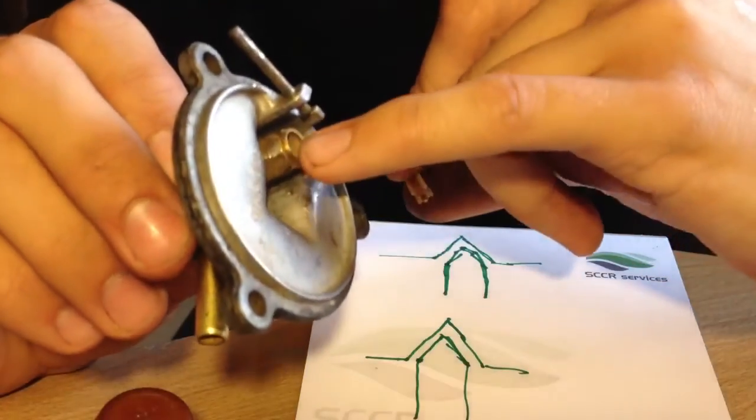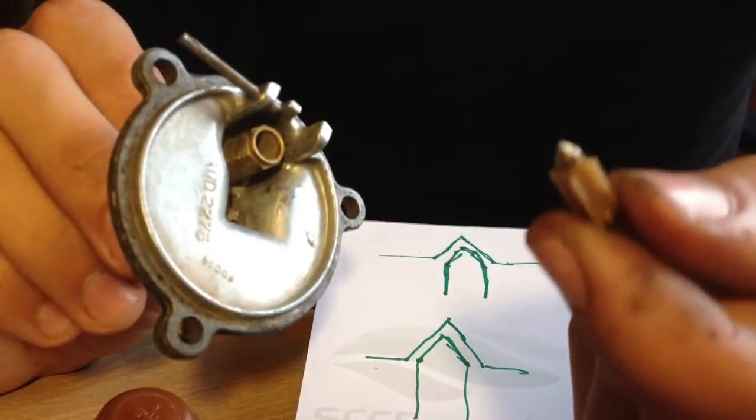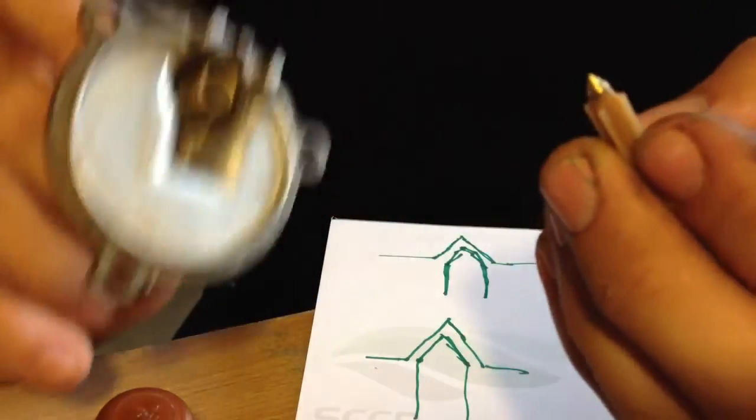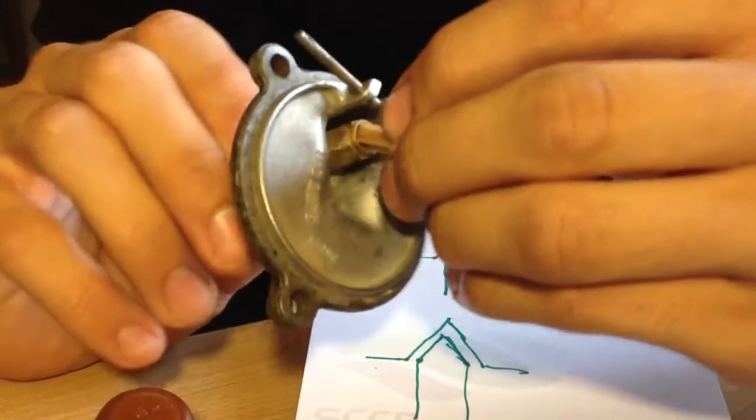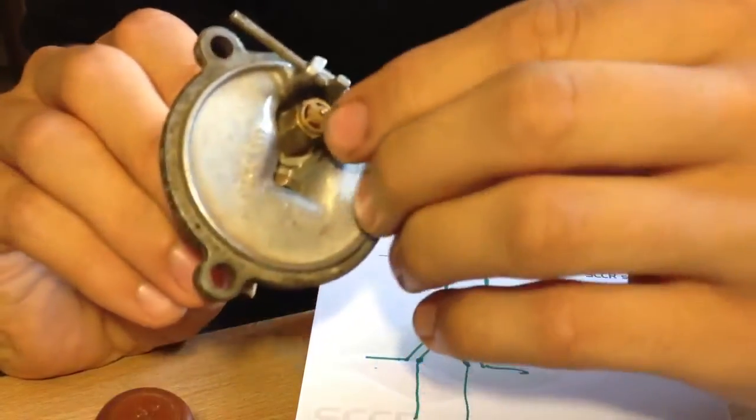To do that, we're going to use a spanner to take this out. We're going to pop our new one in. We're going to pop our new needle in, ensuring that the profiled end of the needle goes into the seat, leaving the sprung loaded part of our needle out.